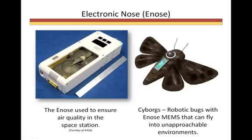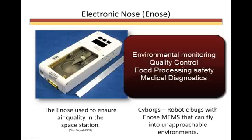The electronic nose, otherwise known as the e-nose, senses a variety of gases, compounds, and combinations of compounds. An e-nose has been developed by NASA for use on spacecraft to alert the crew to dangerous leaks, such as ammonia. Such a device has numerous medical, industrial, and commercial applications, such as environmental monitoring, quality control, food processing, and medical diagnostics.